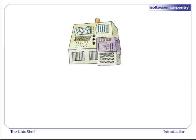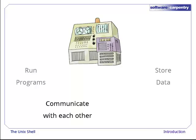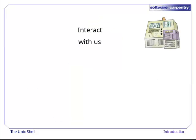At a high level, computers really do four things. They run programs, they store data, they communicate with each other, and they interact with us. They can do the last of these in many different ways.